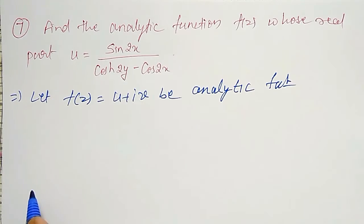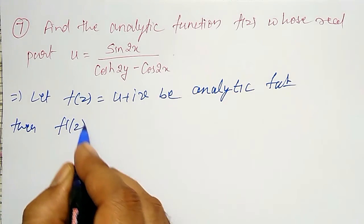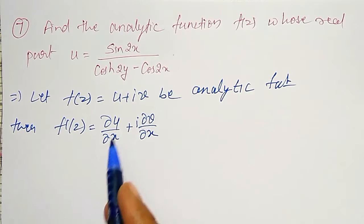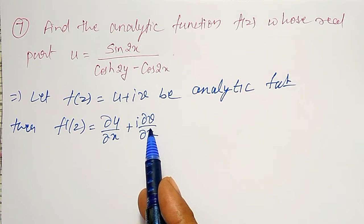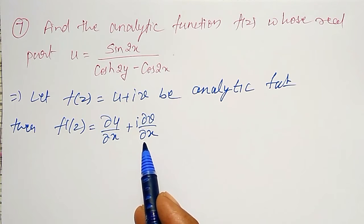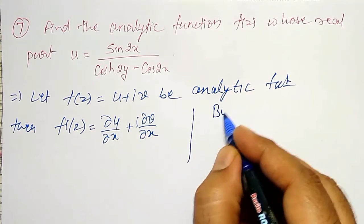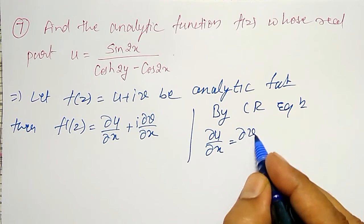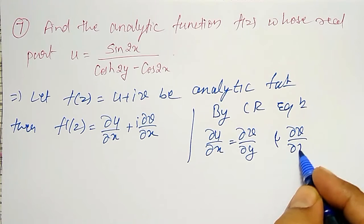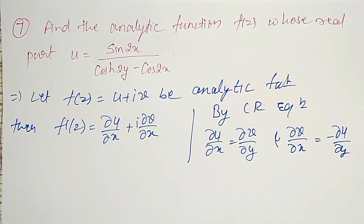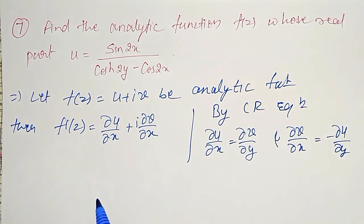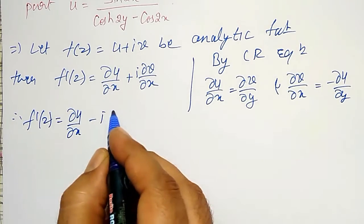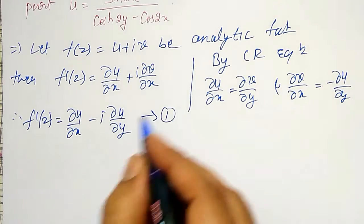If it is an analytic function, then it is differentiable. That is, f'(z) I can write as ∂u/∂x + i·∂v/∂x. But u is given — partial derivative with respect to x I can find out — but v is not given. Therefore ∂v/∂x I can replace by −∂u/∂y using CR equations. By CR equations: ∂u/∂x can be replaced by ∂v/∂y, and ∂v/∂x becomes −∂u/∂y. Therefore my f'(z) will become ∂u/∂x − i·∂u/∂y. Call this equation number 1.